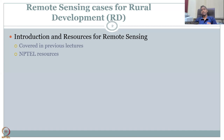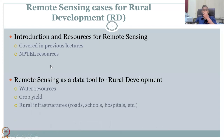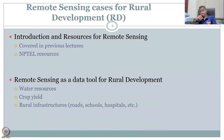For example, it could be infrastructure, water aspects, crop, agriculture, or health. We will discuss this in some examples in today's lecture. What we'll cover today is how Remote Sensing is used as a tool for rural development, focusing on water resources, crop yield, and rural infrastructures. We'll give you some examples, and while we build the course throughout the 12 weeks, we will also give you some live hands-on experience of using such tools for Rural Development.